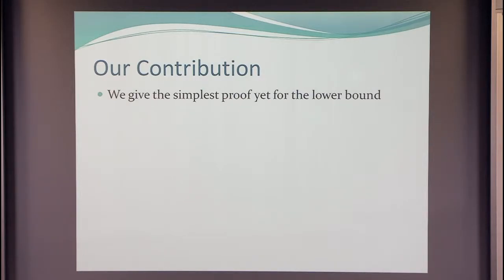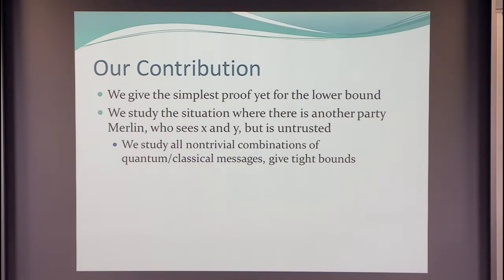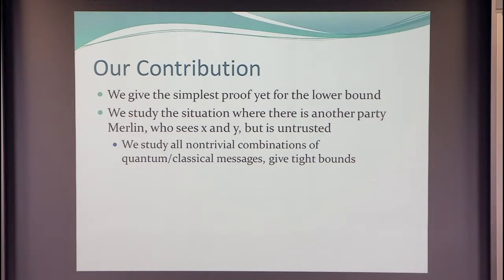We're going to do two things. I'll give you an even simpler proof — if you want to take only one thing away from the talk, it will be that proof. And we study the situation where there's another party, Merlin, who also sends a message to the referee. This guy is not trustworthy, but he knows both of the inputs. We study all non-trivial combinations of quantum and classical messages and give tight bounds for everything.